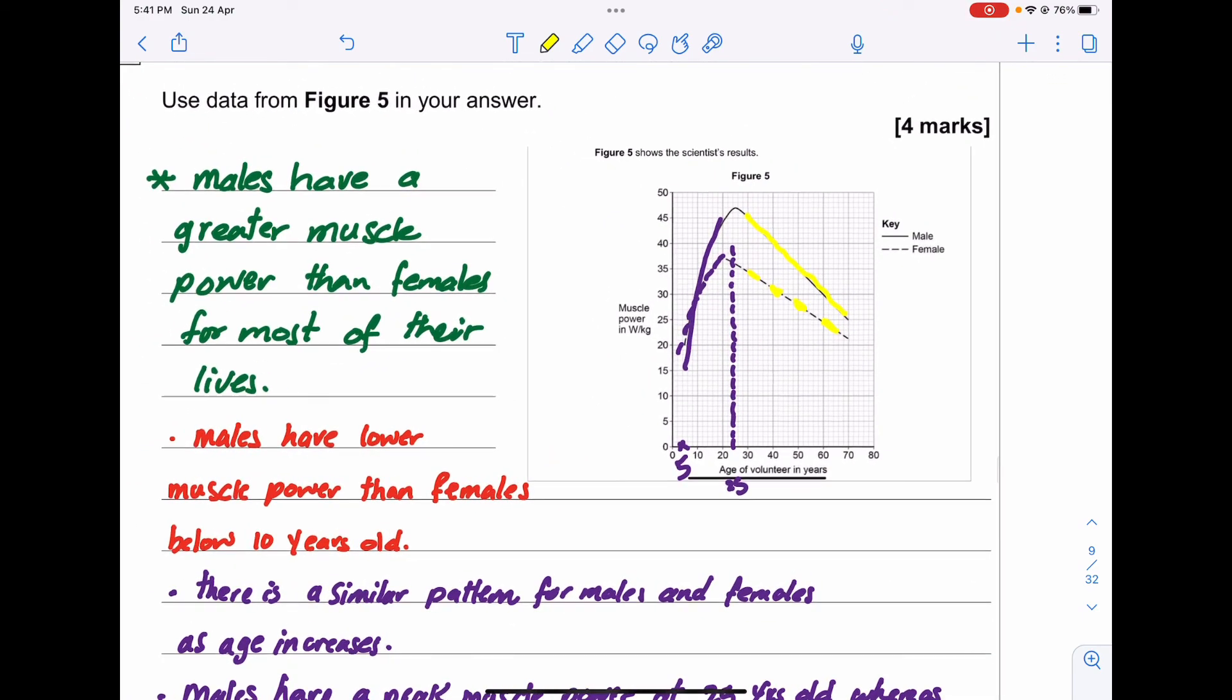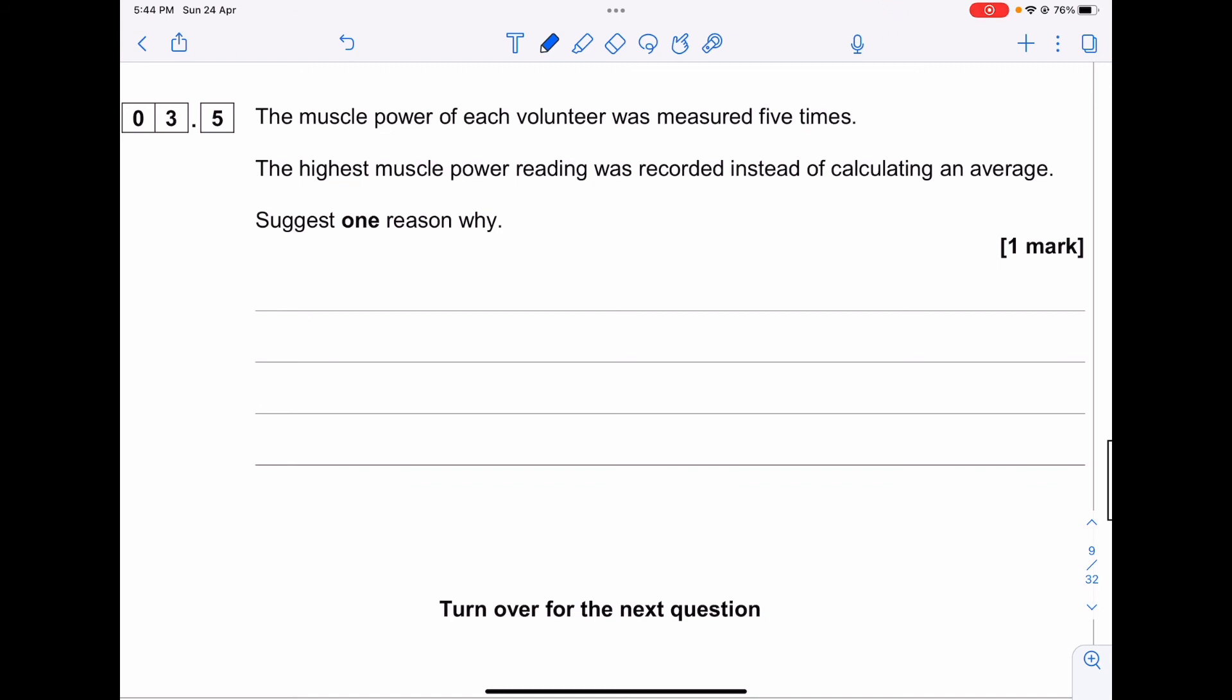Question 3.5: The muscle power of each volunteer was measured five times. The highest muscle power reading was recorded instead of calculating an average. Suggest one reason why. The reason is that maximum height reached is a better indicator of maximum muscle power. Also, performance may improve with practice or get worse with tiredness.